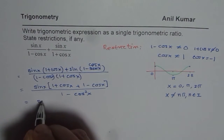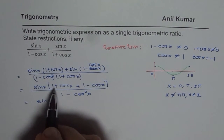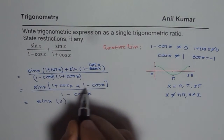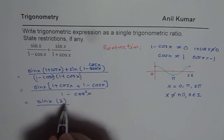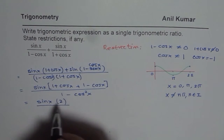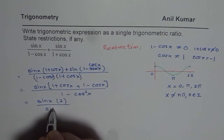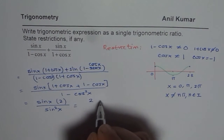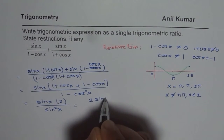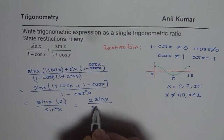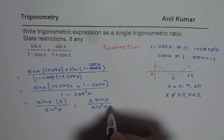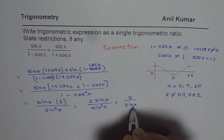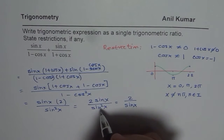This simplifies as follows: 1 plus 1 gives 2, and cos x minus cos x is 0. So we get 2 sin x divided by 1 minus cos squared x, which is sin squared x. We can write this as 2 sin x over sin squared x, which simplifies to 2 over sin x — since sin x and sin x cancel out.